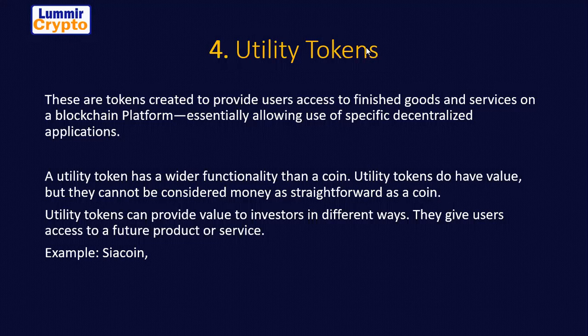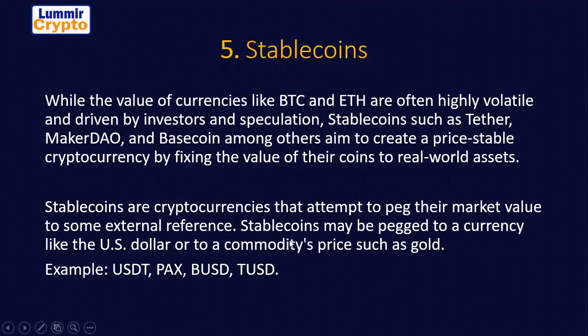There are a lot of utility tokens — you can go ahead and search for more. That is utility token, and we have many of them. Then we have the fifth classification: stable coins.